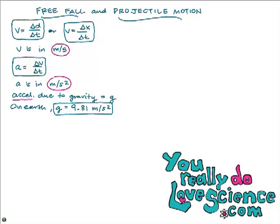Whenever you have acceleration in one of these problems, during the free fall problems, wherever you see an 'a' for acceleration, you're just going to plug in g, or 9.81 meters per second squared. So it's going to be pretty easy whenever you see an 'a', as long as it's vertical acceleration due to free fall.